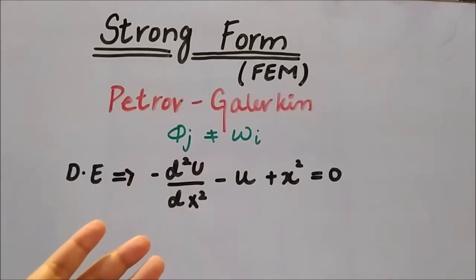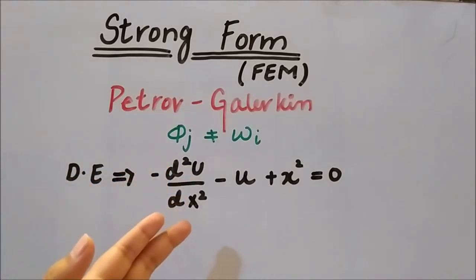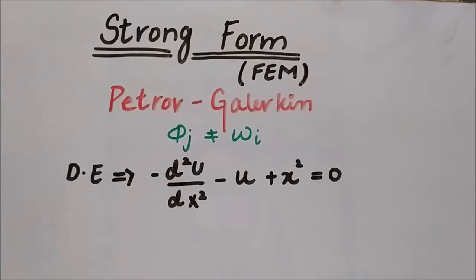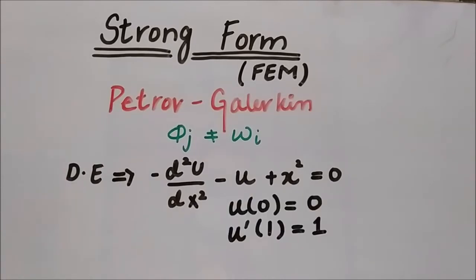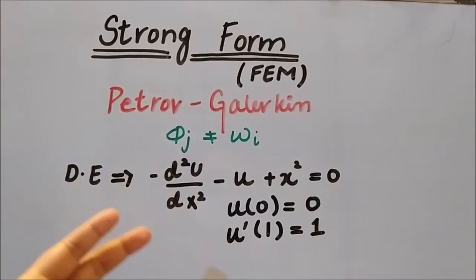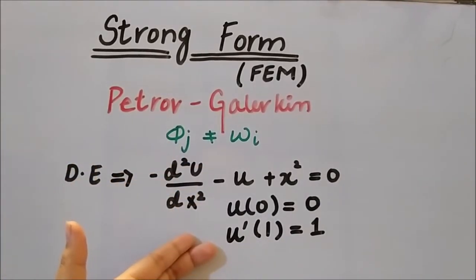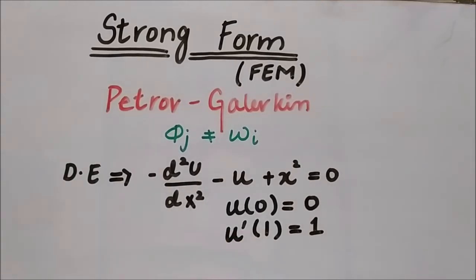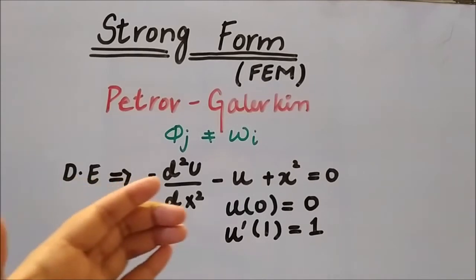Here we have the differential equation: minus d²u/dx² minus u plus x² equals zero, where u is a function of x. The boundary conditions are: u at 0 equals 0 (the bar is fixed from one end), and the derivative of the displacement function at x=1 equals 1. This means the domain is from 0 to 1, and u is the exact primary variable.